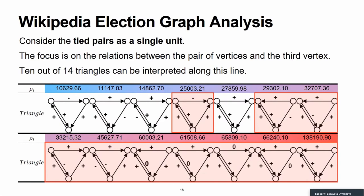This apparent difficulty with superposition principle can be resolved if we consider the tied pairs as a single unit. In this case, we have only two actors: a pair and a third person. The relations between these two actors boil down to two scenarios: either both members of the pair consider the third person as having a higher or equal status, or the opposite. 10 out of 14 triangles shown on the slide can be interpreted along this line.